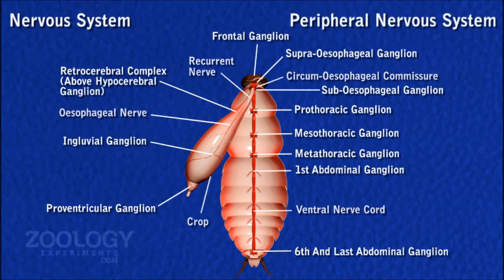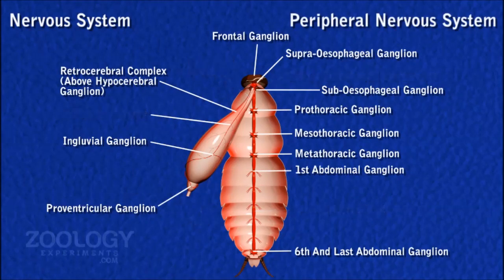Peripheral Nervous System. The nerves given off from ganglia to all parts of the body constitute the peripheral nervous system. The protocerebrum of the brain gives off paired optic nerves to the eyes. The deuterocerebrum gives off paired antennary nerves to the antennae, and the tritocerebrum supplies nerves to the front and labrum.